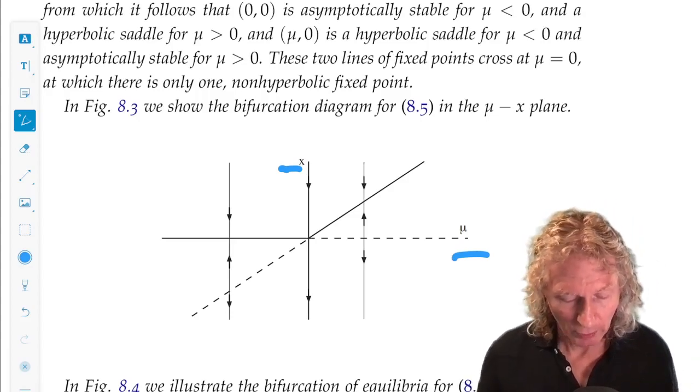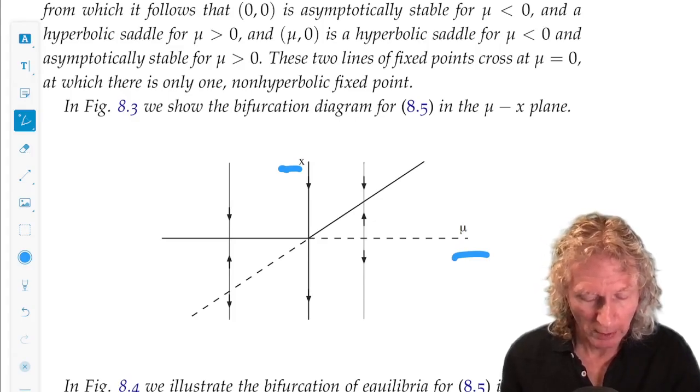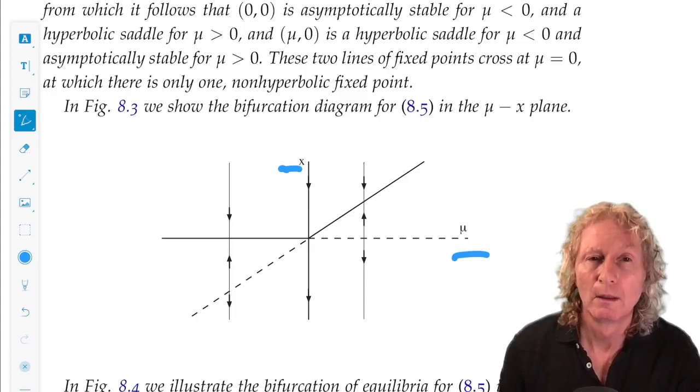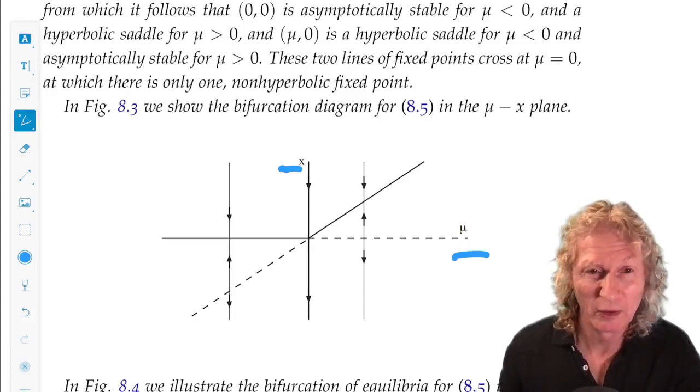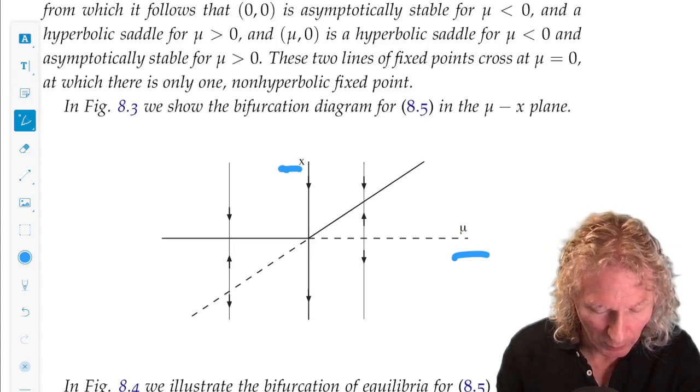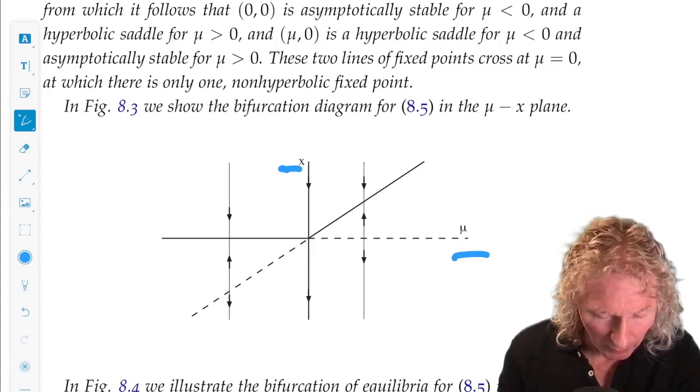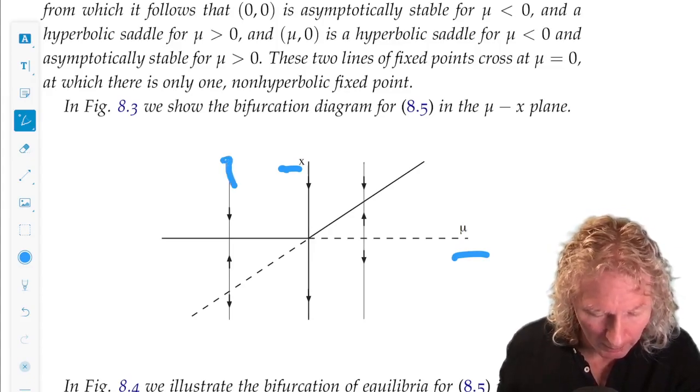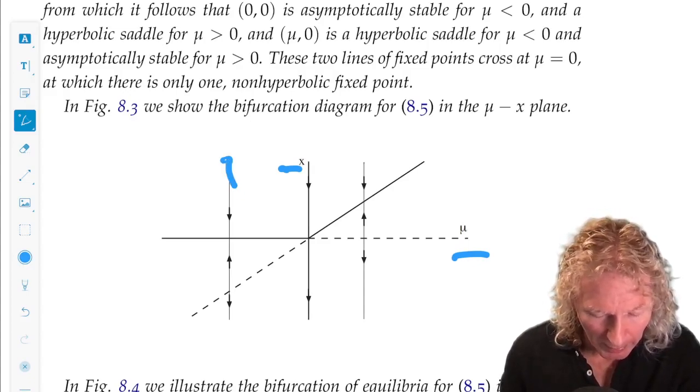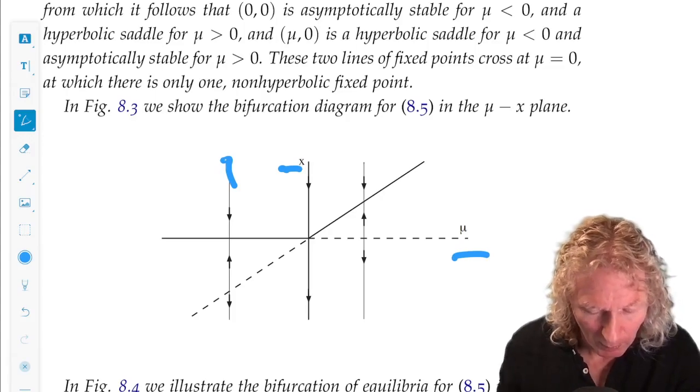We're drawing the vertical lines, which indicate the phase plane, phase space, which is just one-dimensional for that particular value of mu. We see that for mu negative, on this vertical line, we have stable equilibria, and the dashed line is the unstable equilibria.